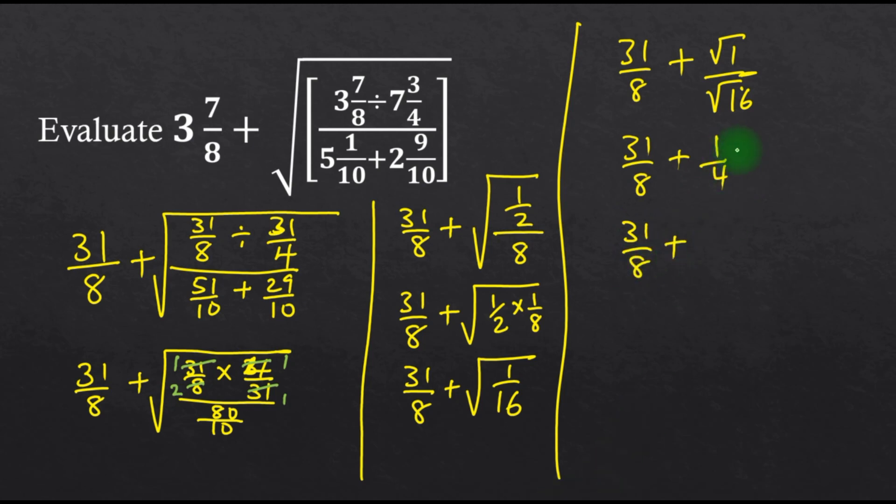I multiply by 2, so 1 times 2 which will be 2 over 8. Therefore I simply add the numerators since the denominators are the same. So 31 plus 2, that is 33 over 8.